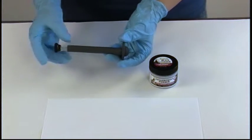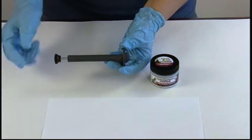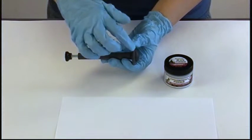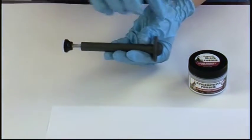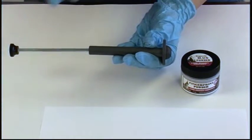The way this wand works is there's a magnet at the end of the plunger. When the plunger is fully depressed, the magnet is at the base and we can pick up the magnetic powder. When you want to release the powder, just pull up on the plunger and it should fall right off.